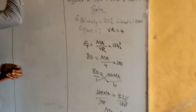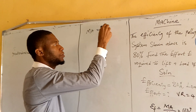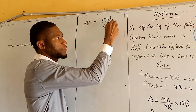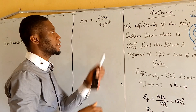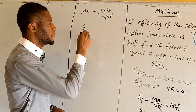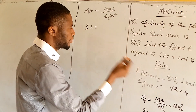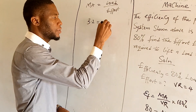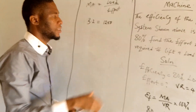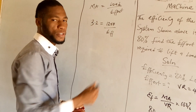We know that mechanical advantage is equal to load over effort. The mechanical advantage is equal to 3.2, which equals the load — the load is 1,200 Newton — all over the effort, which is not given.